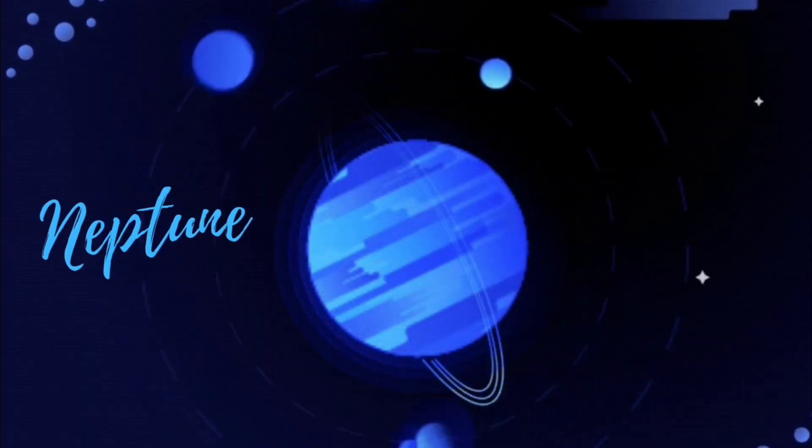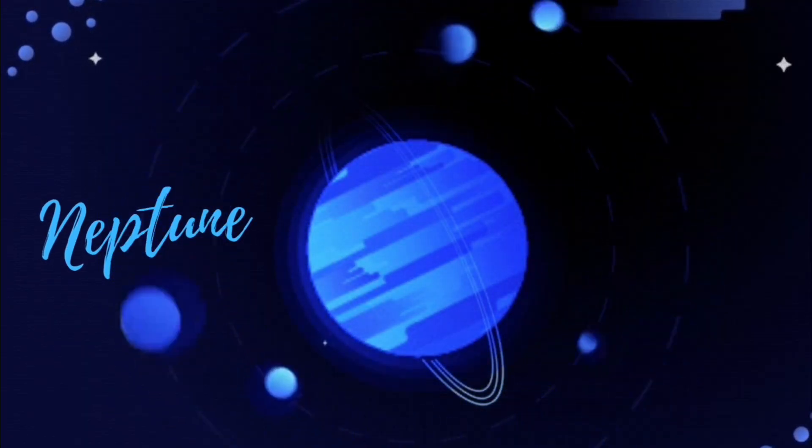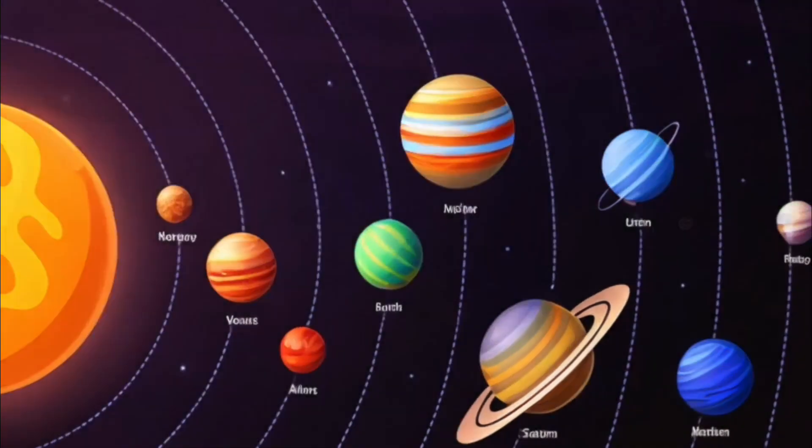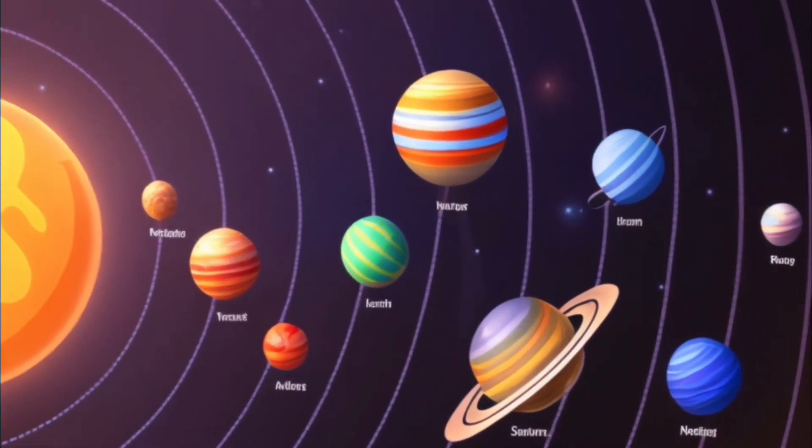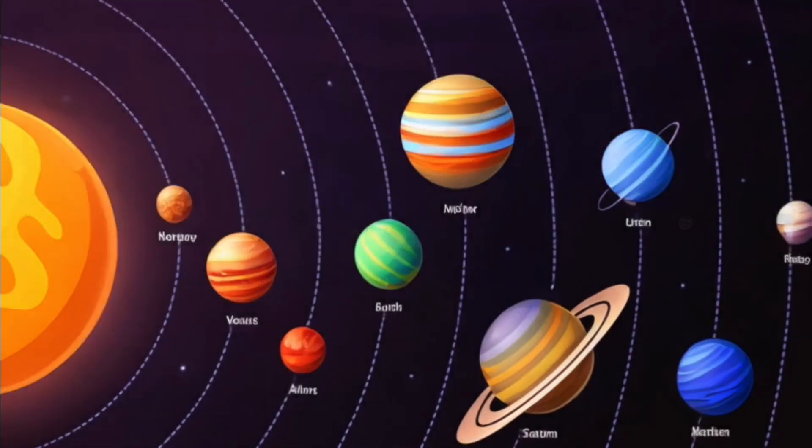Neptune is the farthest planet from the Sun, and it's a cold, windy place. It has a deep blue color and lots of storms.